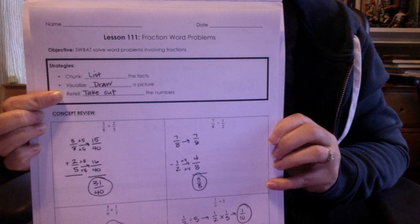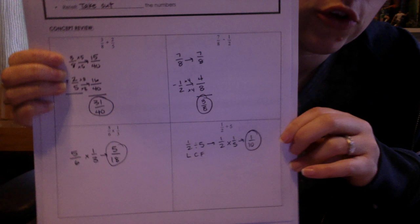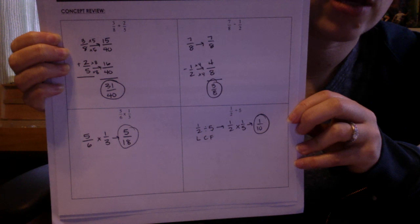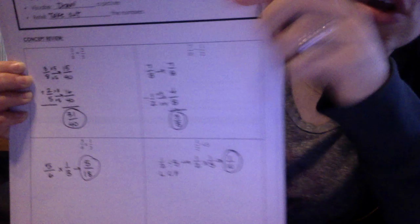All right, just a quick concept review to remind you of how to work with fractions. This should be pretty much review for you. But looking at addition and subtraction of fractions, notice both of these are written vertically up and down. So in addition and subtraction with fractions, you're going to need to make sure that you find a common denominator.